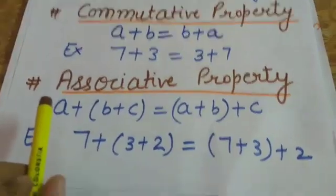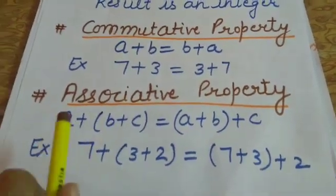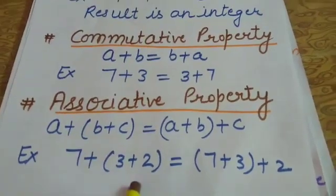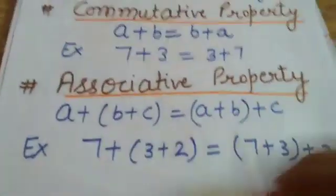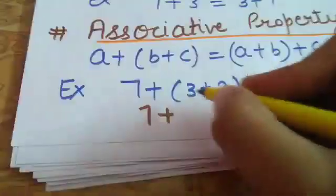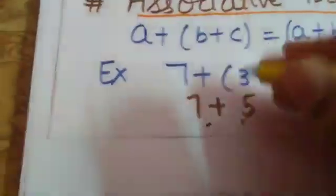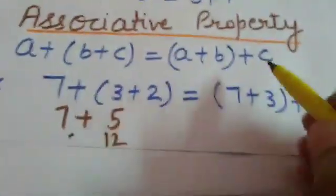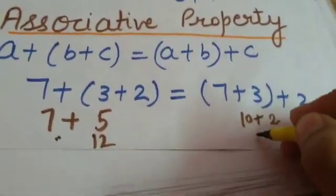Let's take an example: a = 7, b = 3, c = 2. On the LHS: 7 + (3 + 2). First add 3 + 2 = 5, then 7 + 5 = 12. On the RHS: (7 + 3) + 2. First add the numbers in the bracket: 7 + 3 = 10, then 10 + 2 = 12. LHS equals RHS, both are 12, so this property holds in integers.